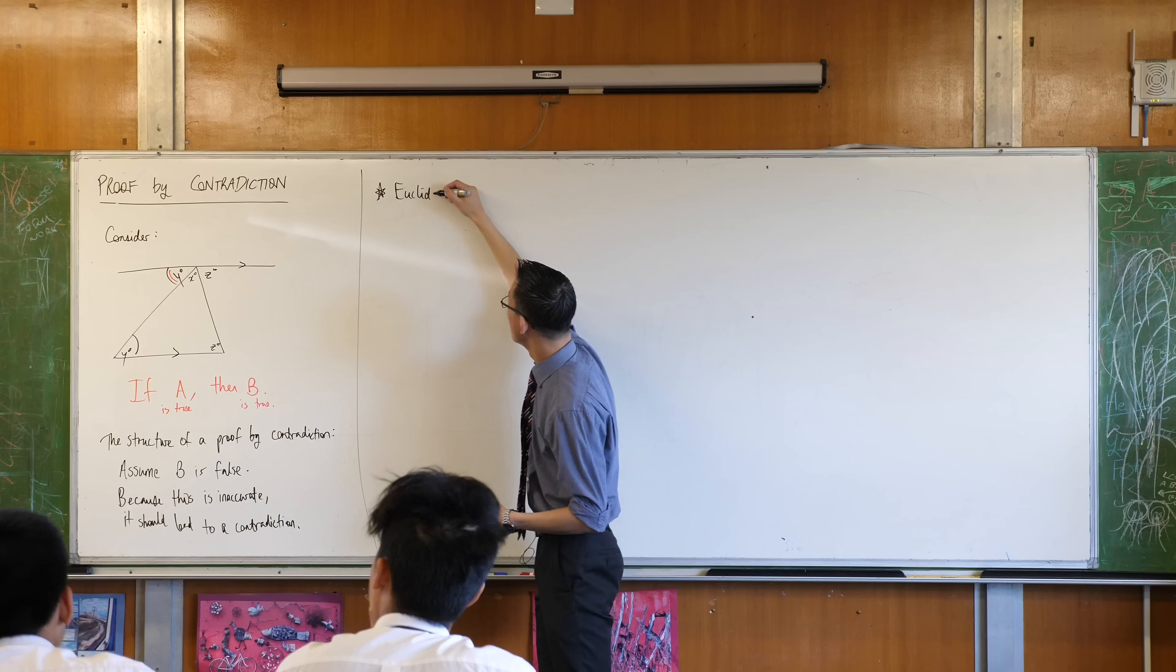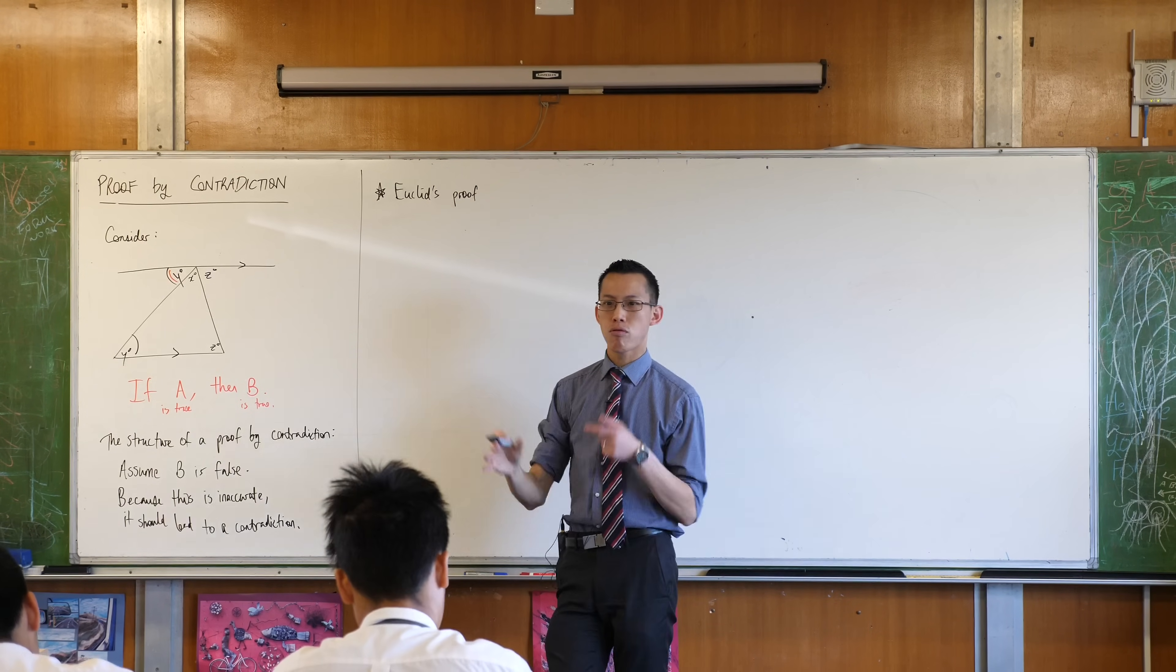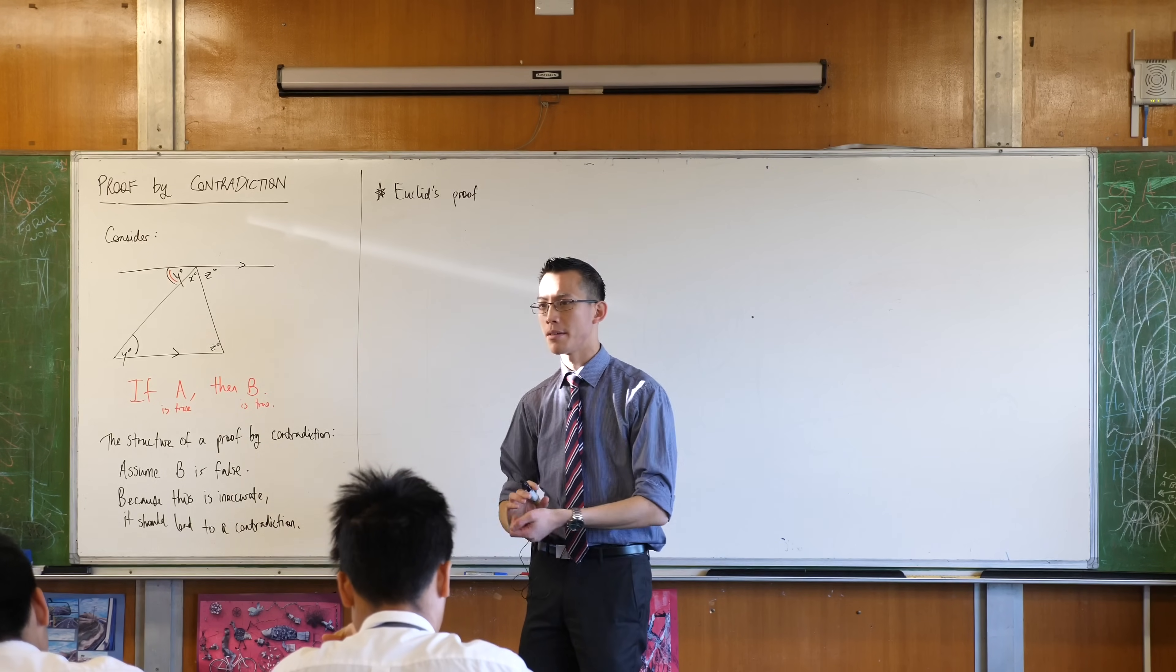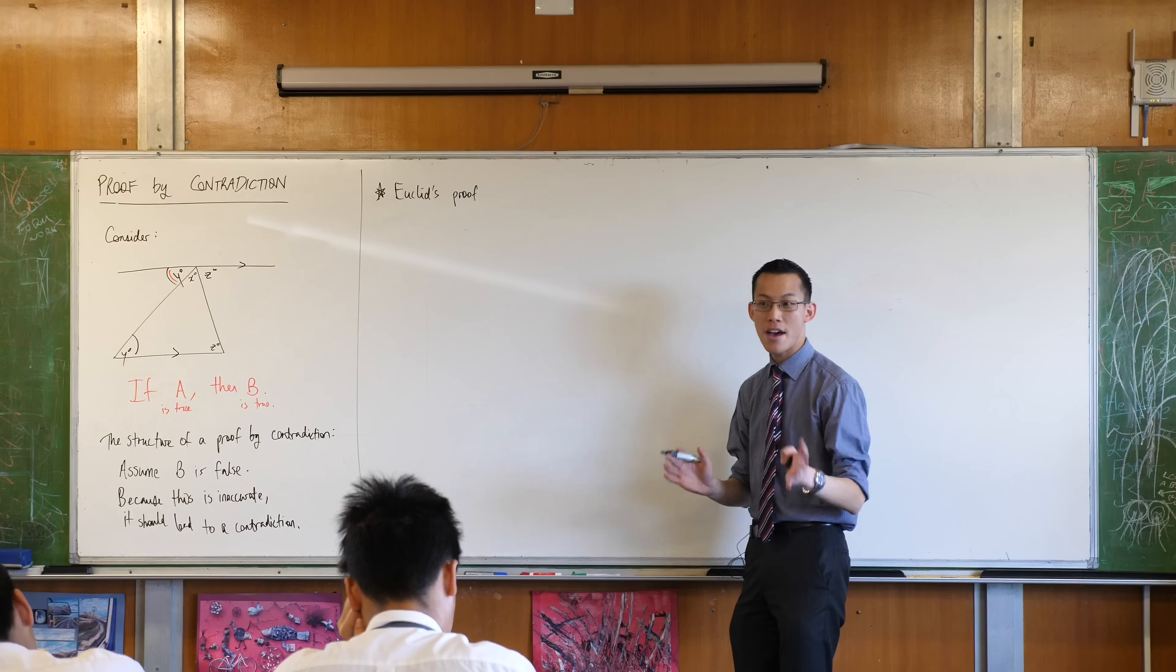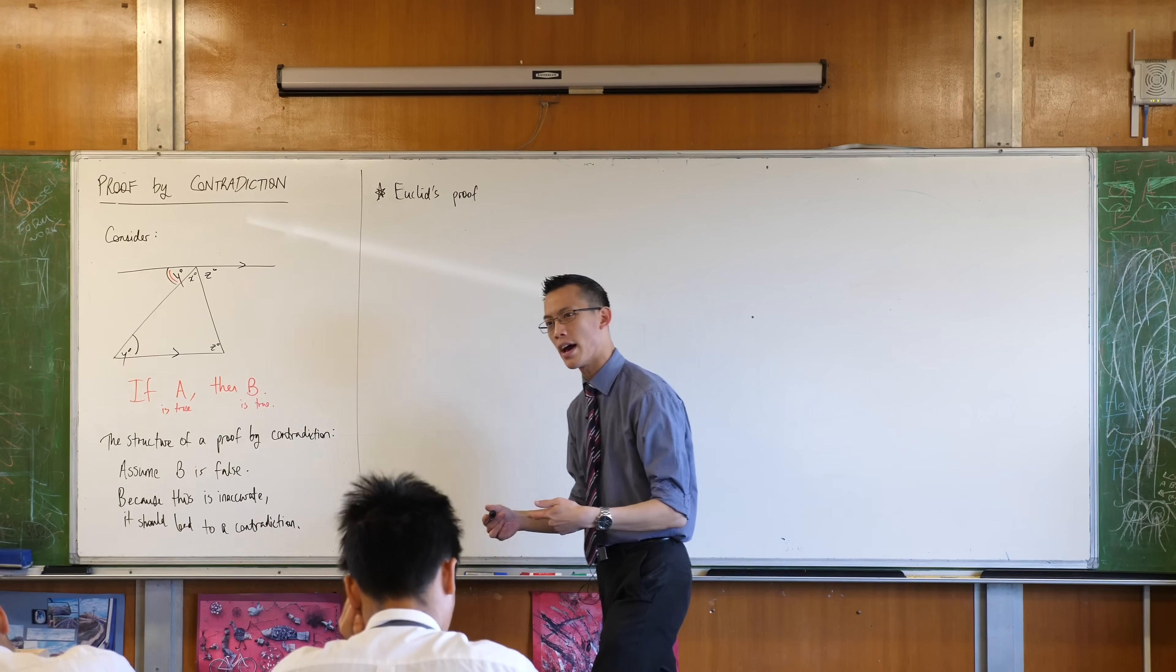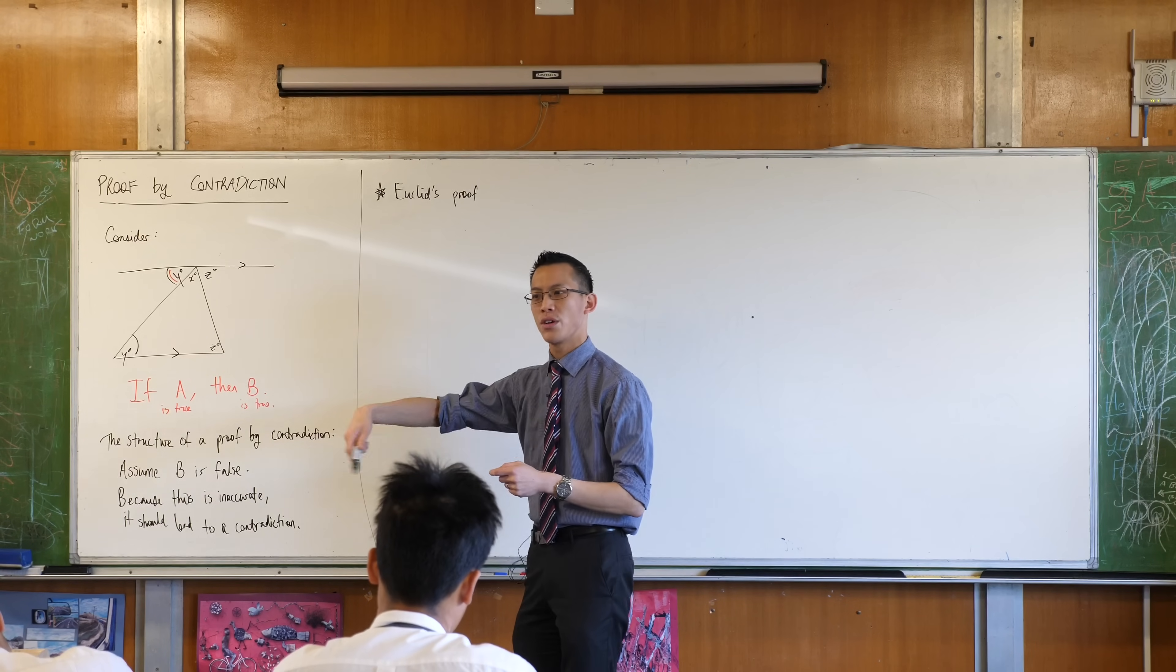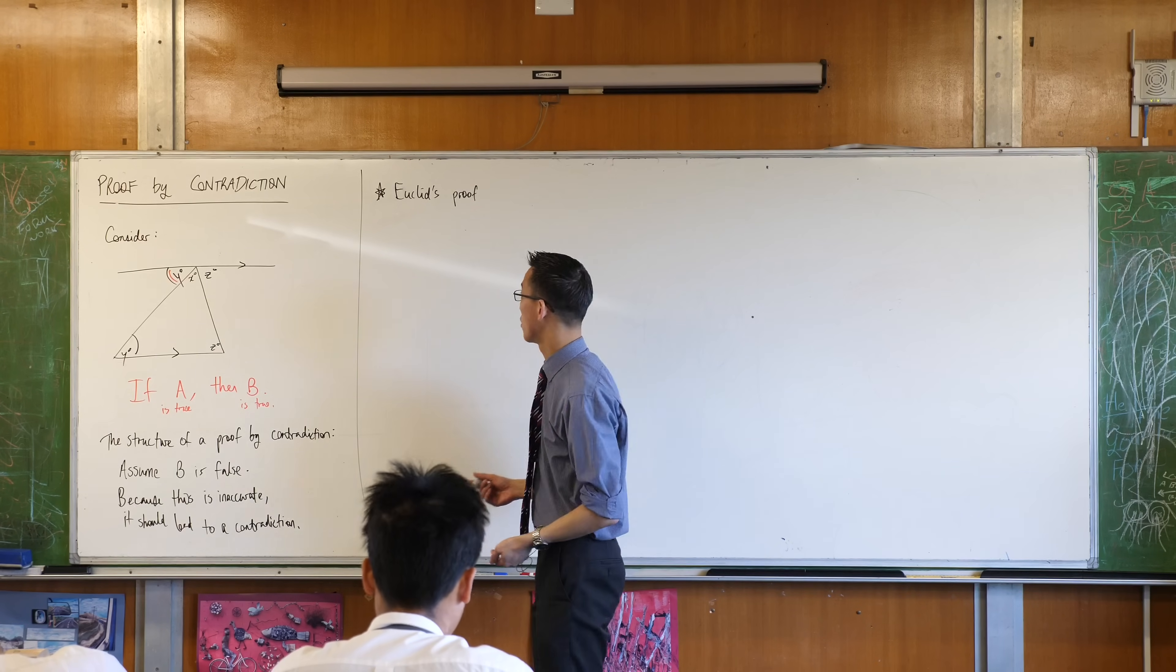Now Euclid proved that, you know prime numbers? You guys know what prime numbers are, right? He proved that there's an infinite number of prime numbers, that they'll never ever end, which is quite impressive, because scientifically you can't prove that, because you can keep on going and going and going, but there always might be a point where it stops. So how do you know whether we got to that point or not?